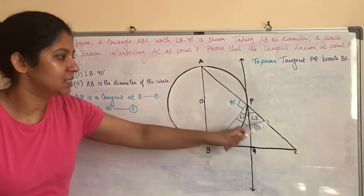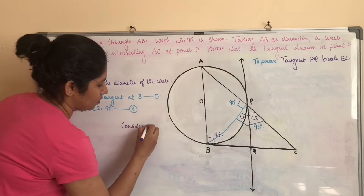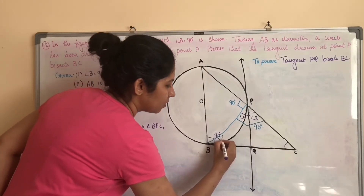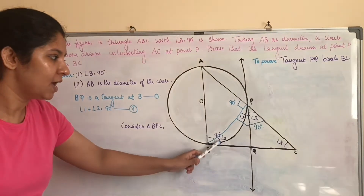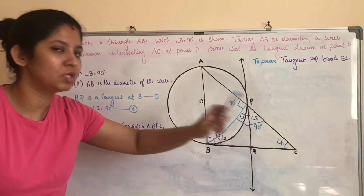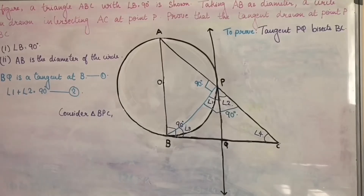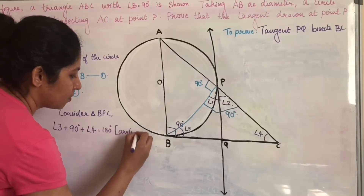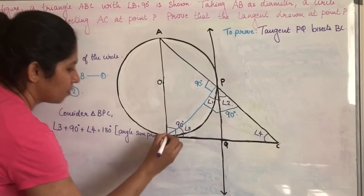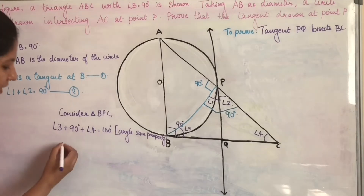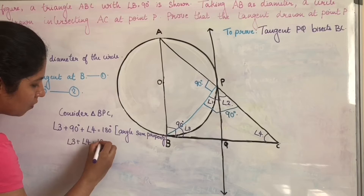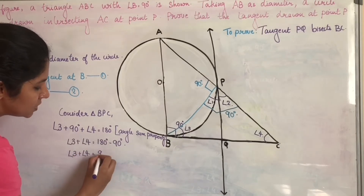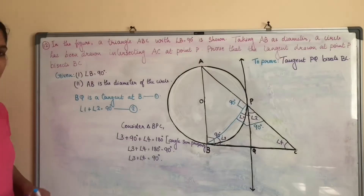Next, consider triangle BPC. The angles are marked as angle 3 and angle 4. Since the angles of the triangle sum to 180 degrees: angle 3 plus 90 degrees plus angle 4 equals 180 degrees. Therefore, angle 3 plus angle 4 equals 90 degrees. Mark this as Equation 3.